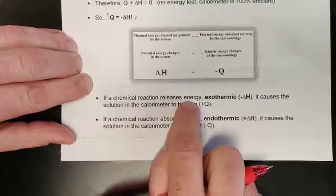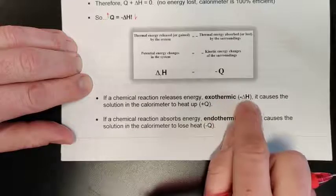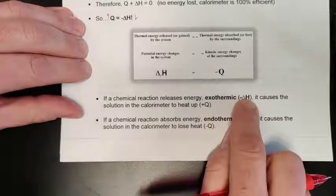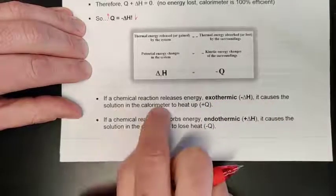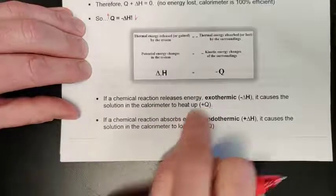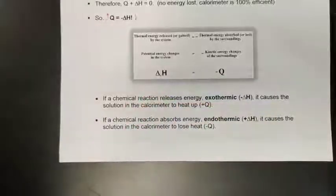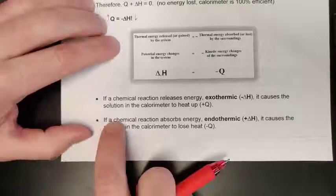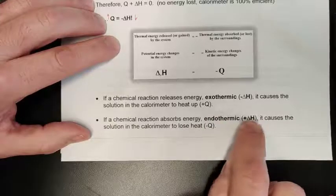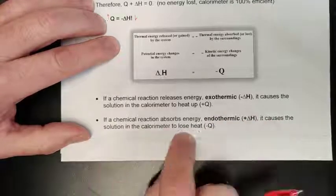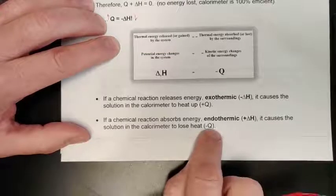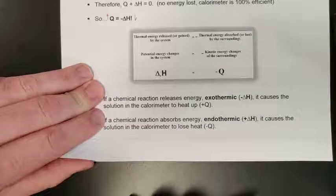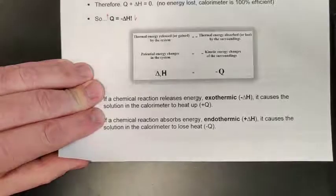To summarize: if a chemical reaction releases energy (exothermic), it has a loss of energy, which causes the solution in the calorimeter to heat up by the exact same amount q. If a chemical reaction absorbs energy (endothermic), we see an increase in its delta H, but this causes the calorimeter to lose heat and the temperature drops. Examples will be put into the next lesson for 11.2.